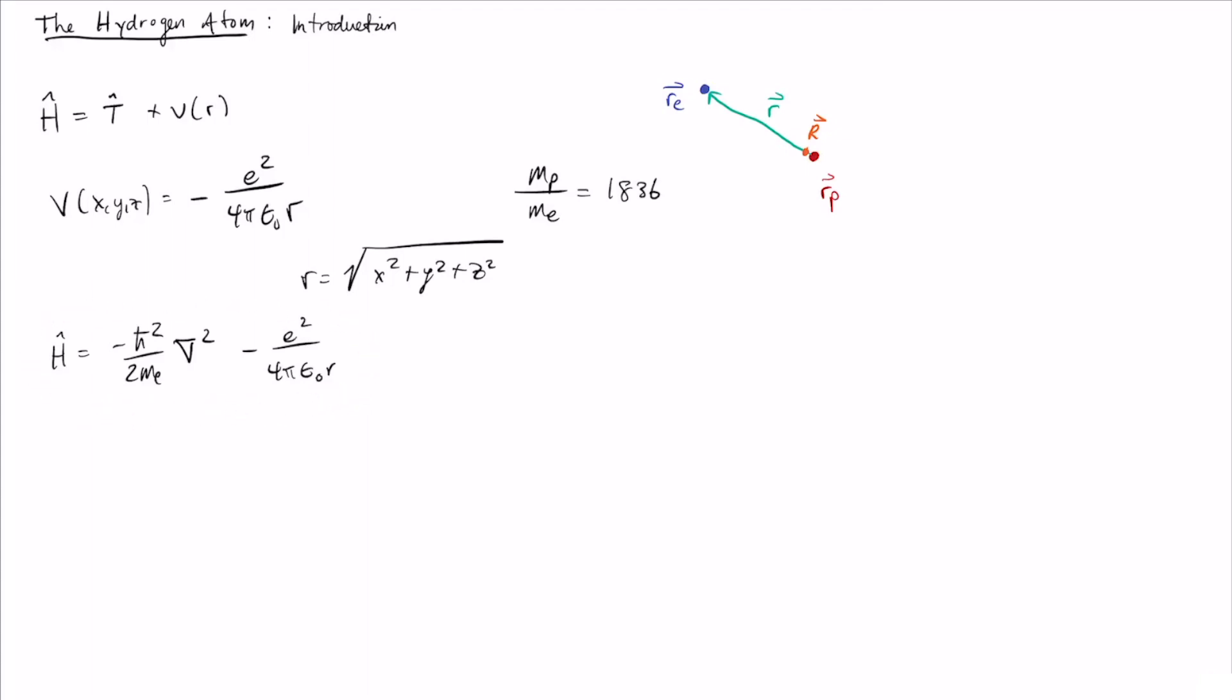Now this is in the form of what's known as a central potential. A central potential like this just means any potential that only depends on the distance here and not on any of the angular components. And for any central potential, it'll be a lot easier to then work instead in spherical coordinates.